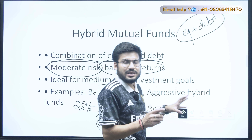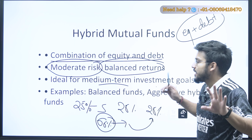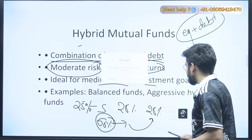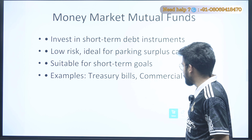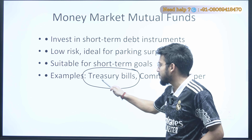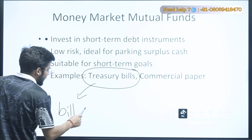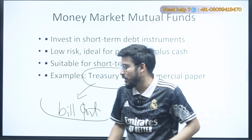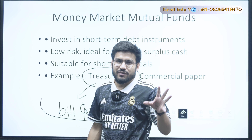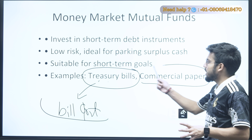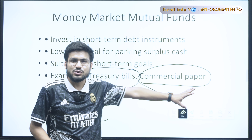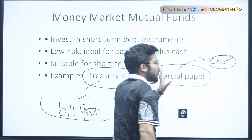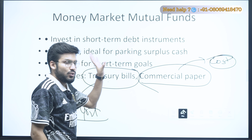Then we have the Hybrid Mutual Fund. As the name suggests, hybrid is a combination of equity plus debt. It consists of moderate risk and balanced returns. It is ideal for medium-term investment goals. Examples are balanced funds and aggressive hybrid funds. SEBI has a mandate for balanced funds: you invest a minimum of 25% in small caps, 25% in mid caps, 25% in large caps, and 66% in large cap overall — this is to cap the risk for investors.